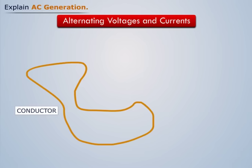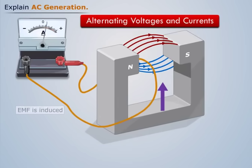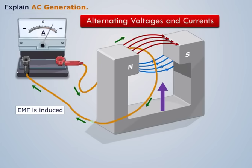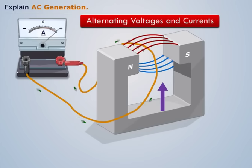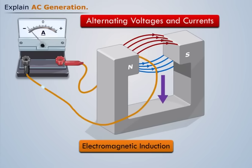We already know that if a conductor is placed in a magnetic field and either the field or the conductor moves, an EMF is induced in the conductor which causes current to flow. This effect is called electromagnetic induction. The polarity of the induced voltage and the direction of current flow are determined by the direction the conductor moves through the magnetic field. Reversal of the direction of movement of the conductor through the magnetic field reverses the voltage polarity and the direction of current flow.